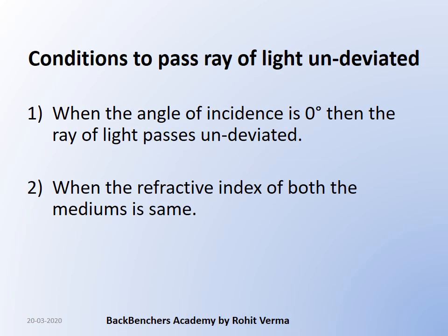There are two conditions in which a ray of light passes through a medium undeviated — with no bending. The first is when the angle of incidence is zero, meaning the ray comes perpendicular to the surface, so it passes straight through. The second is when the refractive index of both mediums is the same — if both mediums have the same density, there is effectively just one medium and no bending occurs.